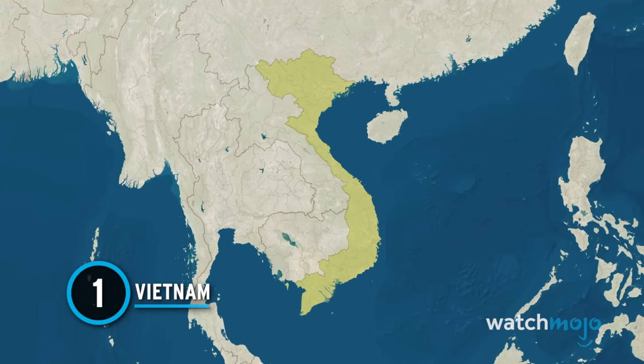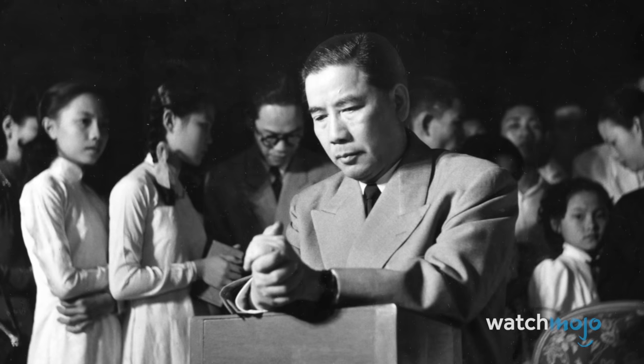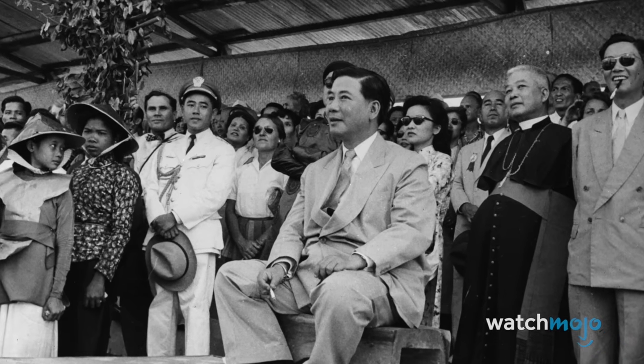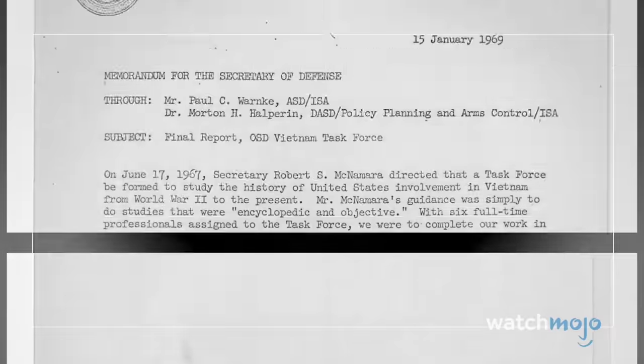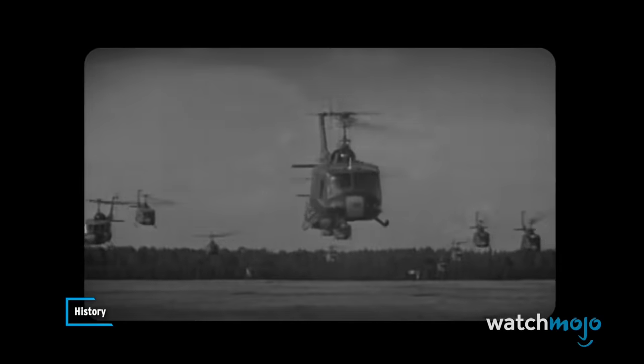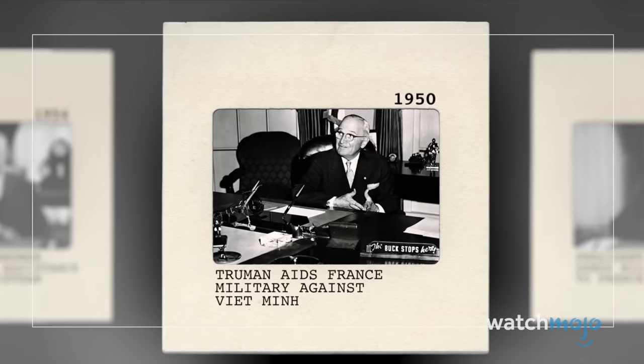Number 1: Vietnam. Ngo Dinh Diem assumed the presidency of South Vietnam in October 1955, largely backed by the United States. Yet in the early 1960s, the U.S. became increasingly dissatisfied with Diem, particularly for his persecution of Buddhists and inability to effectively combat communist insurgency. The Pentagon Papers, which were leaked in 1971, revealed how the CIA provided support to disgruntled military officers plotting a coup. The government had been involved in Vietnam through several presidencies, unbeknownst to the American people — as early as 1950, the Truman administration gave military aid to France against the Viet Minh. The Kennedy administration eventually withdrew its support for Diem, signaling a hands-off approach. Ultimately, the November 1963 coup was successful, leading to the capture and death of Diem at the hands of the military. However, it failed to restore stability to the region, instead sparking more turmoil and escalating the Vietnam War.